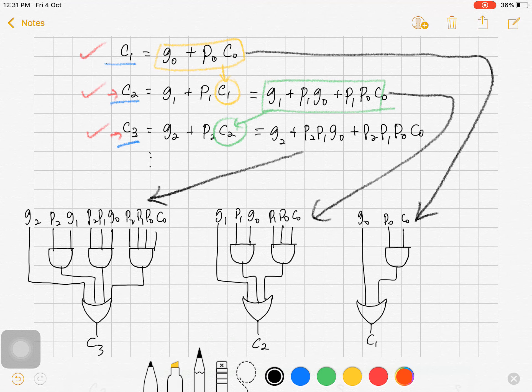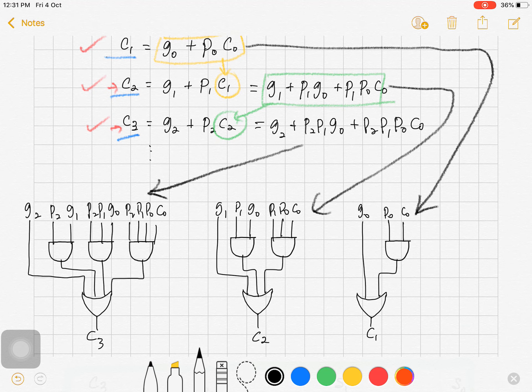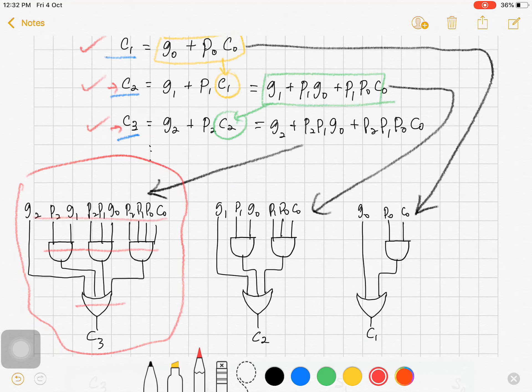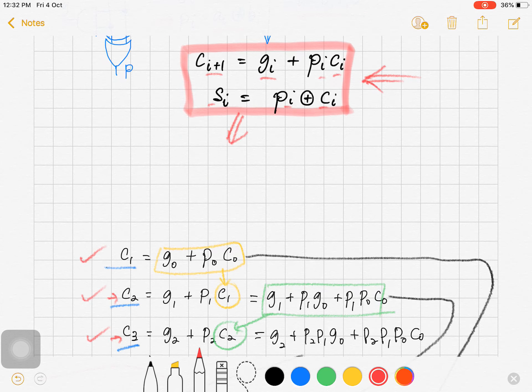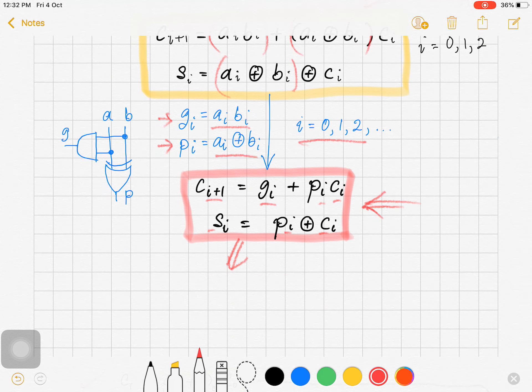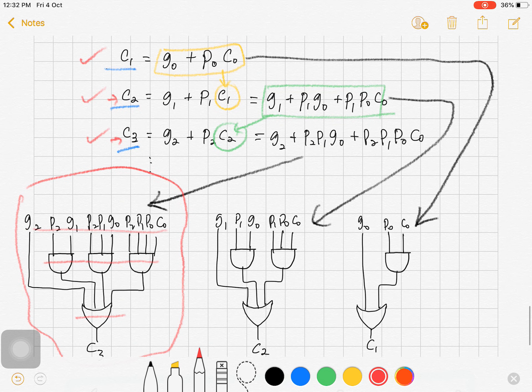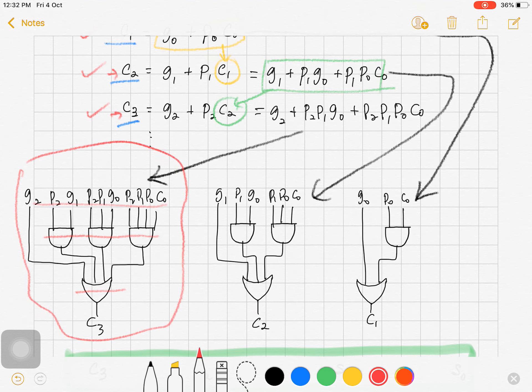Here, if we look at the circuit that produced C3, which is this circuit, we require three levels of logic including the gate level that produced P and G, which is level 1, level 2, and level 3. P equals A XOR B and G equals A and B. So we have three levels of logic that produced C3.